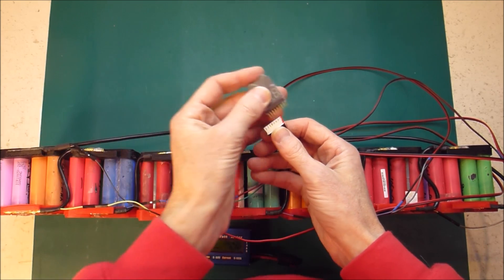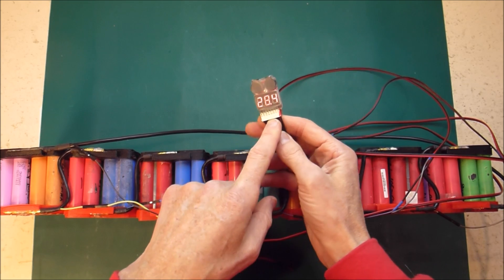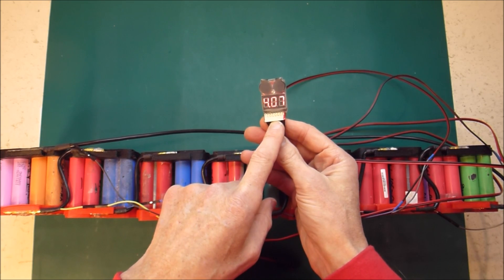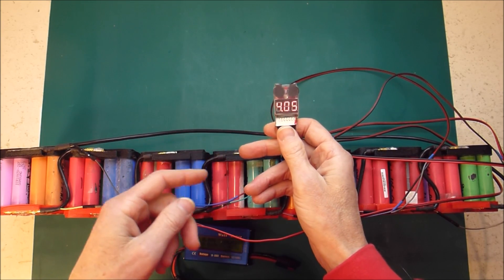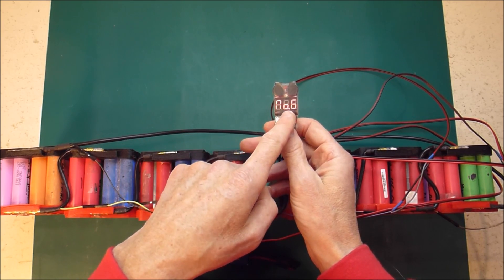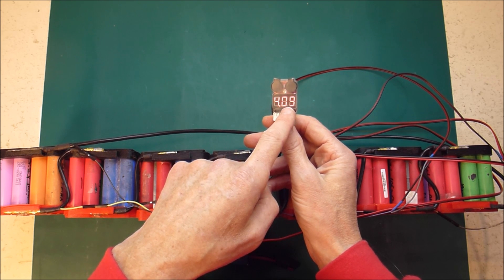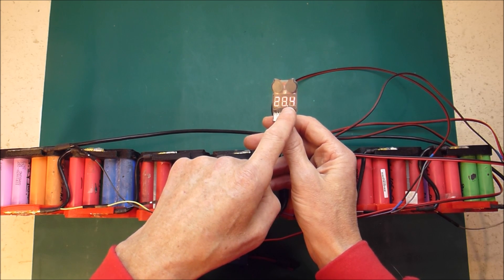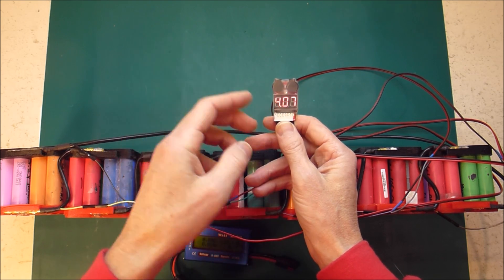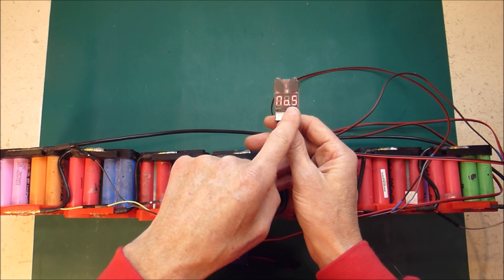So this thing is like $2 each off AliExpress or eBay, incredibly cheap. And it cycles through each cell telling you what voltage it is, then the high and the low and the differential is 0.08 volts, which is not too bad. And then it cycles through the individual cells again.